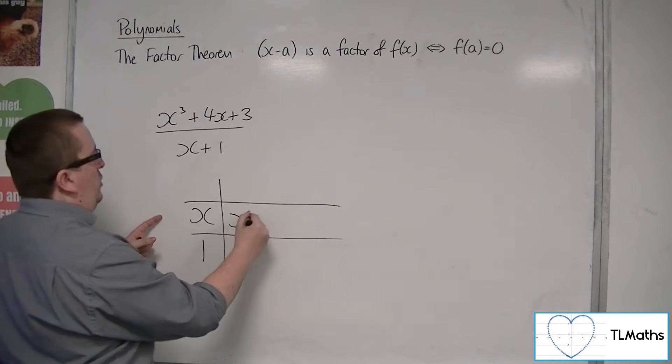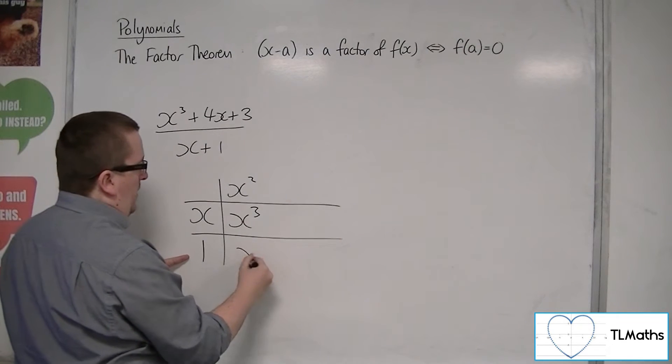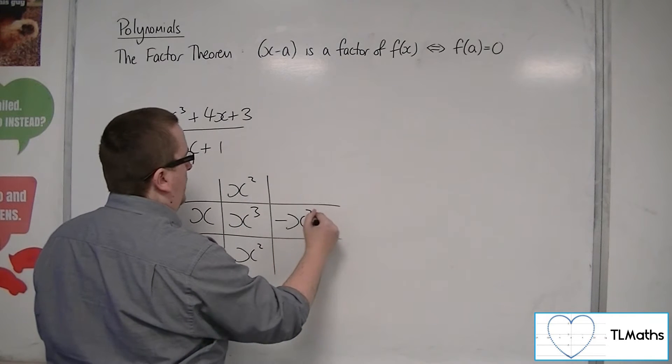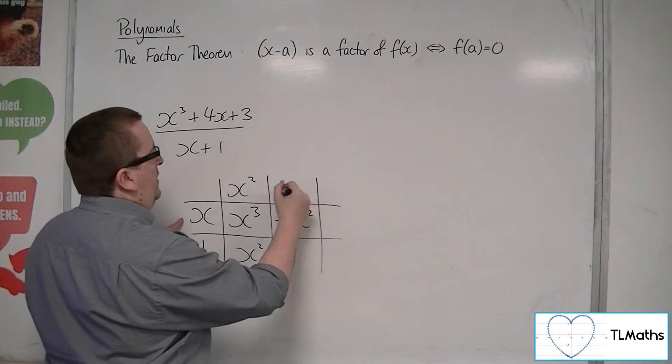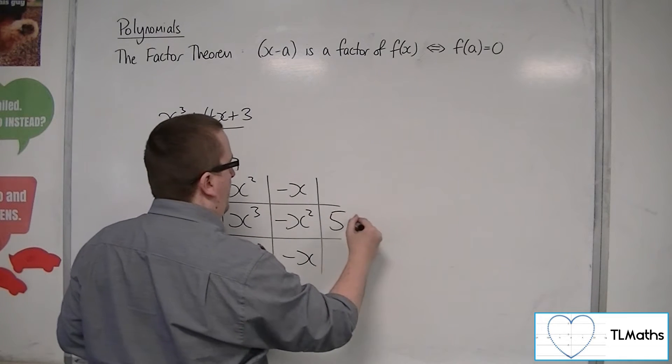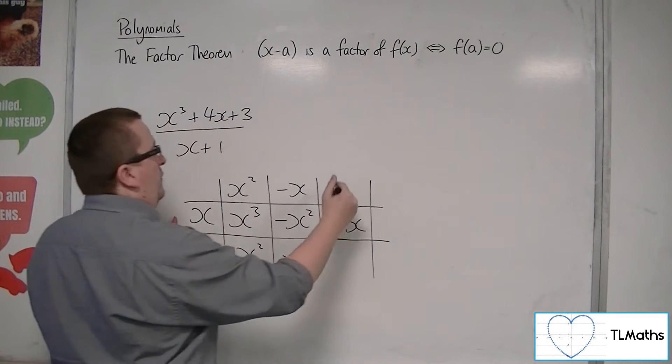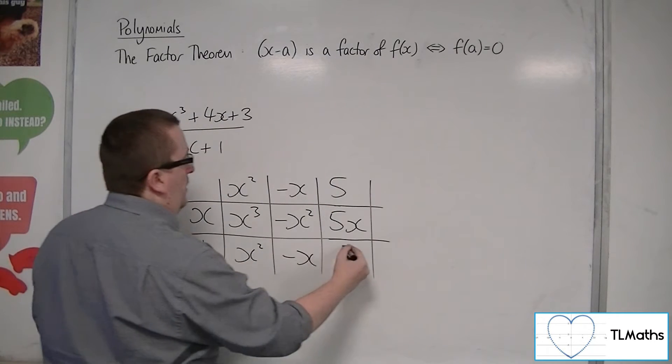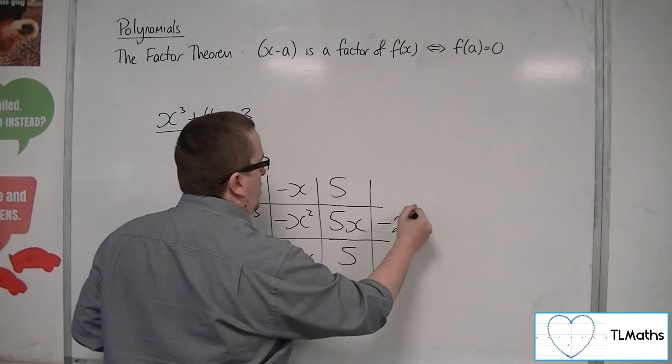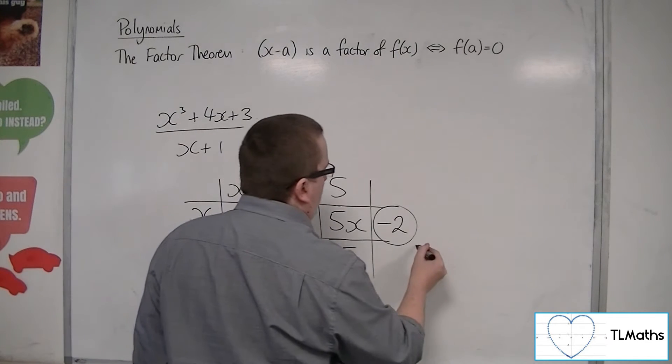So we want an x cubed, and that would have to be x squared. So x squared times 1 is x squared. We don't have any x squared, so I've got to take away an x squared. x as into that go minus x. Minus x times 1 is minus x. I want 4x, so I'm going to have to have a 5x there to add up to 4x. x as into 5x goes 5. 5 lots of 1 is 5. I don't want 5, I want 3, so I've got to take away 2. So this minus 2 that I have here is the remainder.